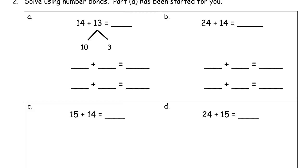Here, take the smaller number, split it up. 10 and 3. We're gonna start with the 14 and add the 10. 24. Then add the remaining part, that 3. For 27.